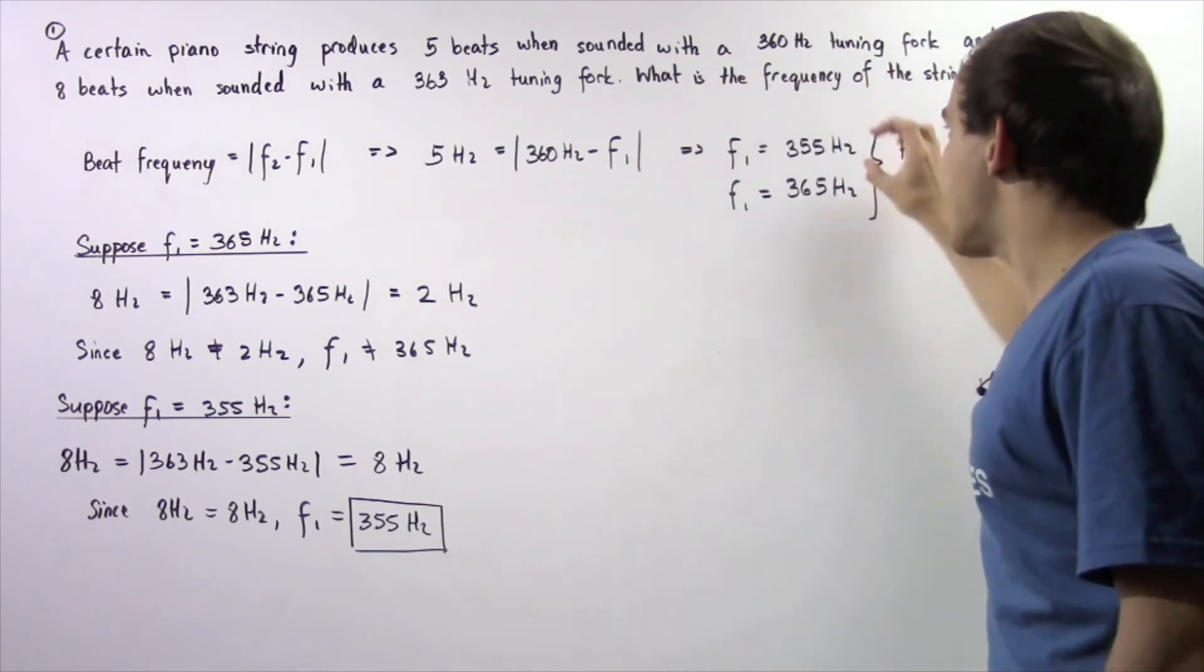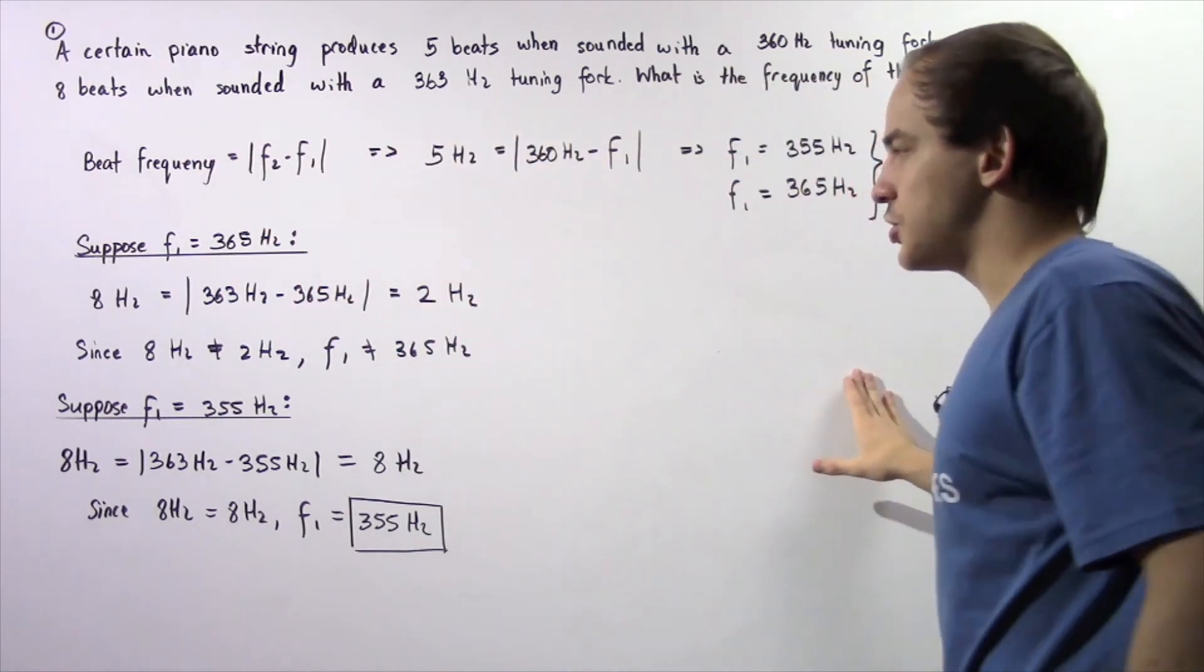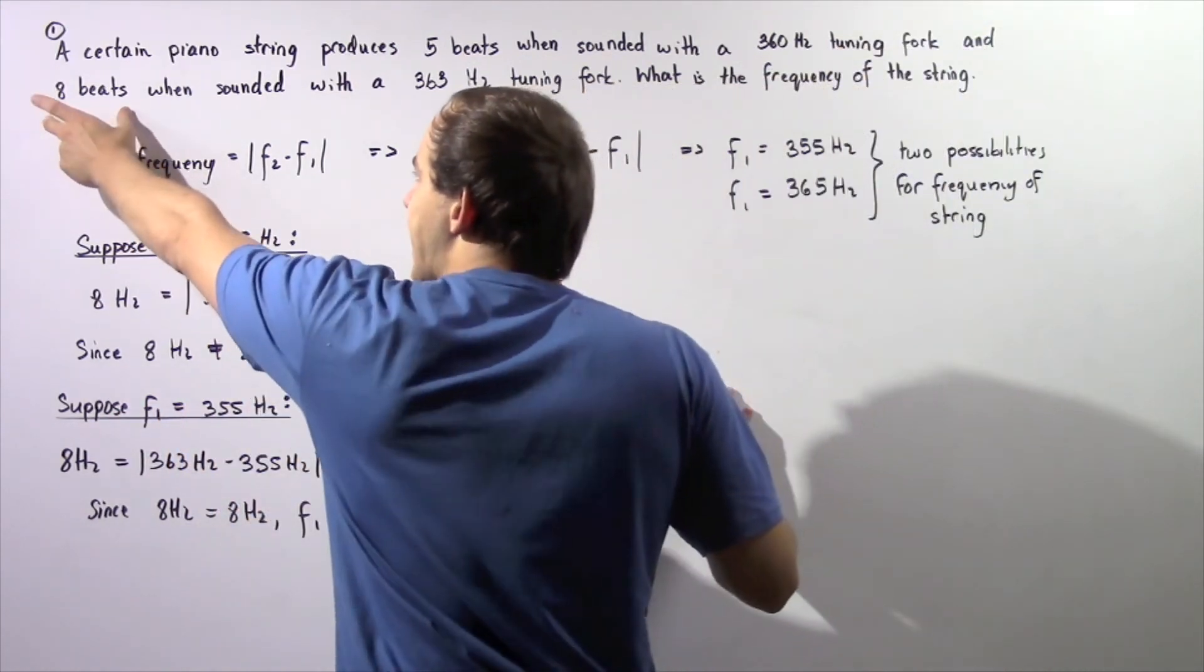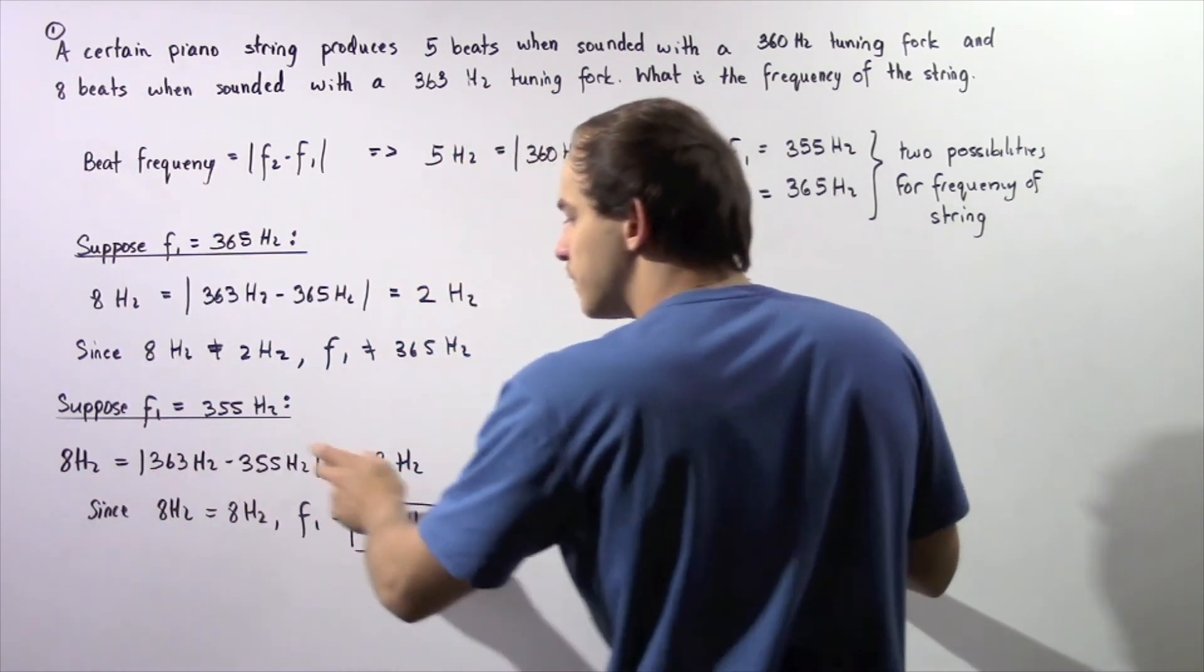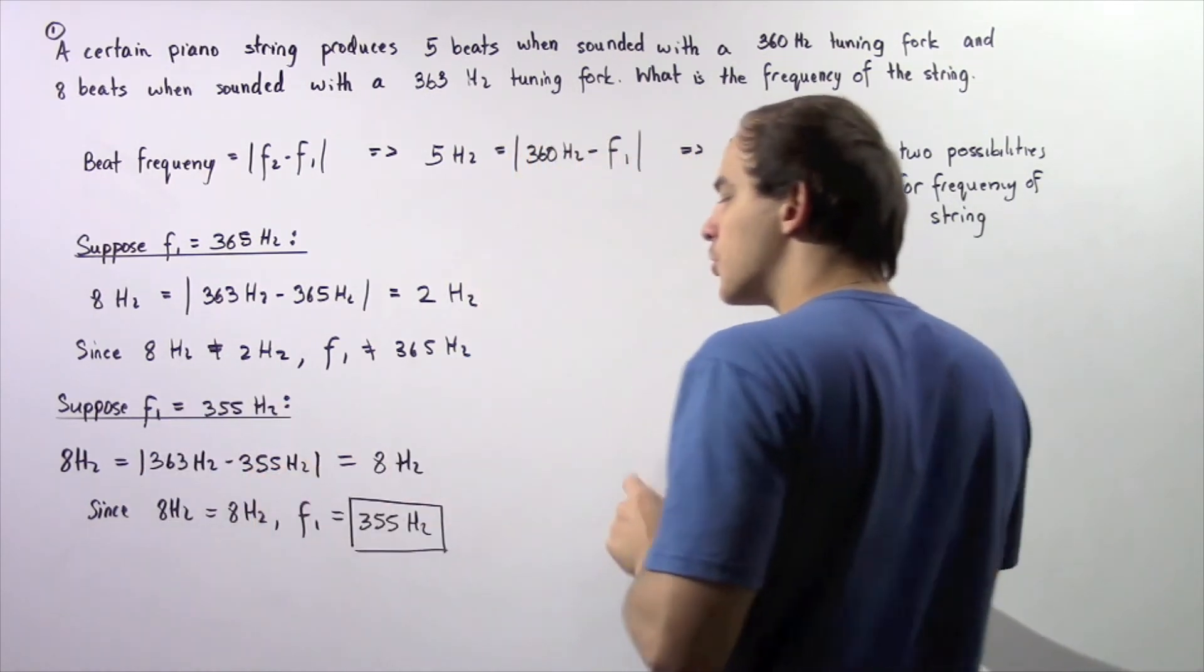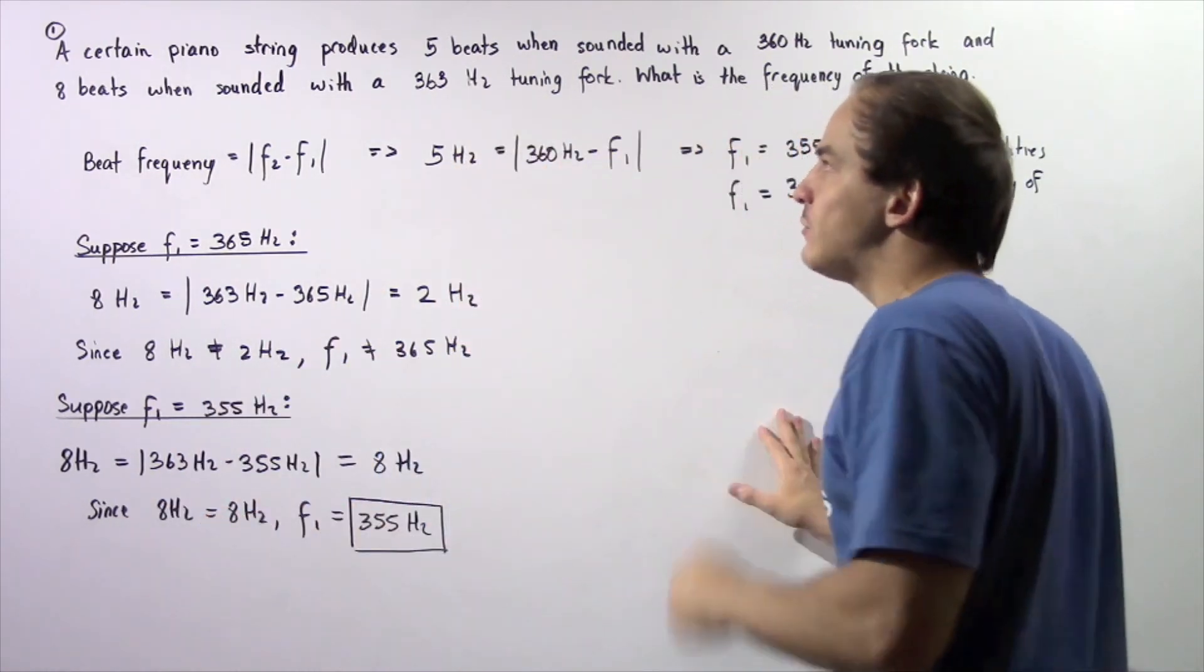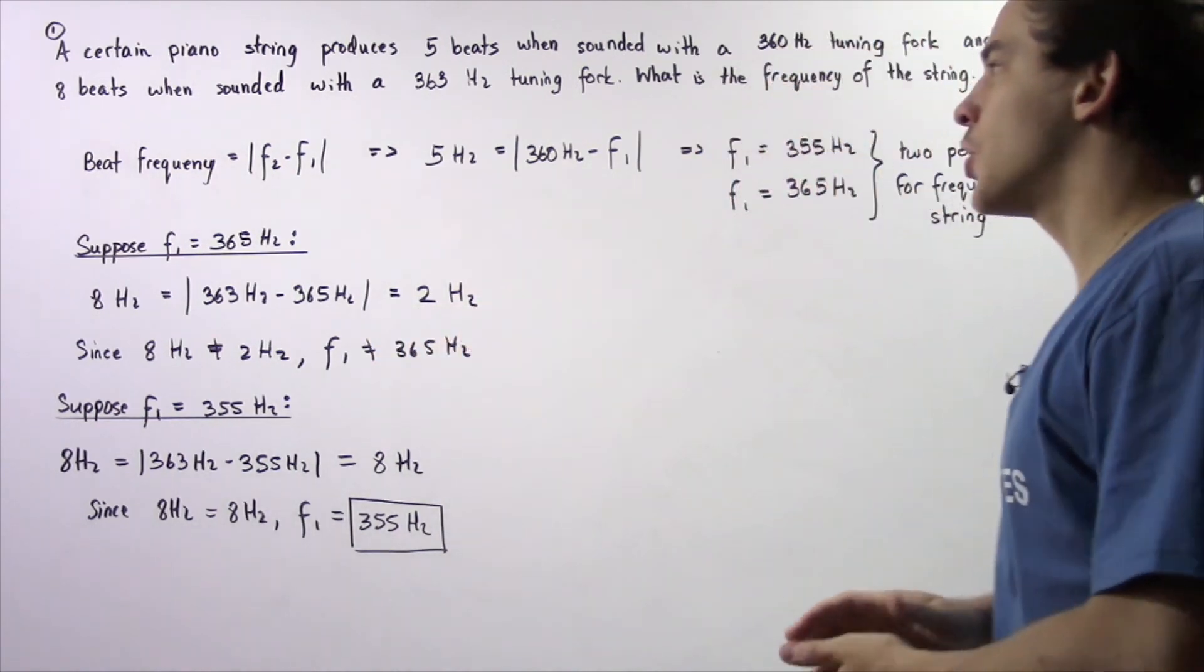And let's make sure, let's check that this, in fact, satisfies the second condition. So, suppose F1 is 355 hertz. So, we have 8 beats, 8 beats per second or 8 hertz is equal to the absolute value of 363 hertz minus 355 hertz gives us 8. And because 8 hertz is equal to 8 hertz, the frequency of the piano string is, in fact, 355 hertz.